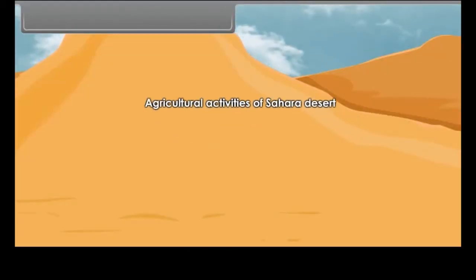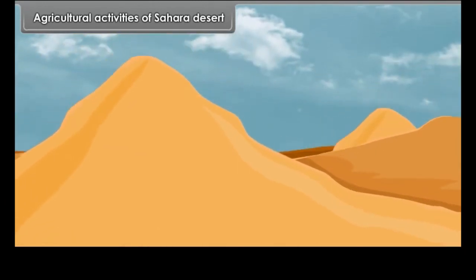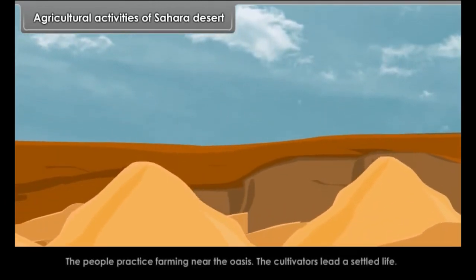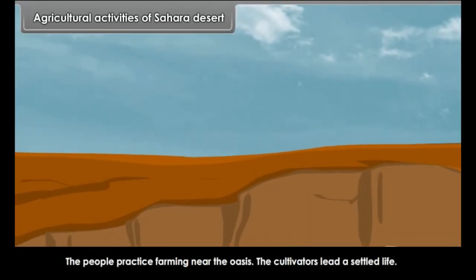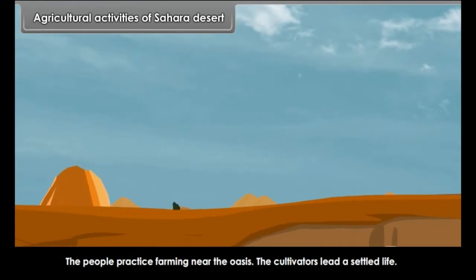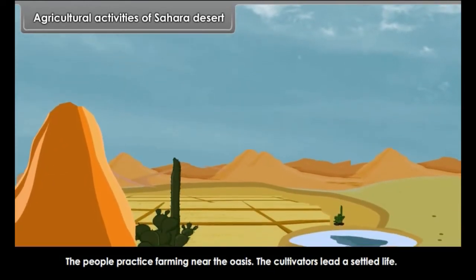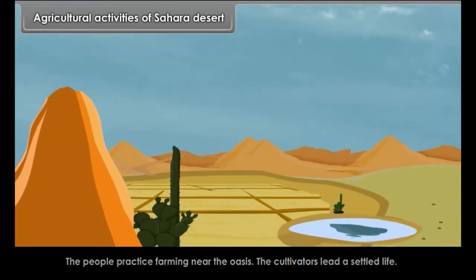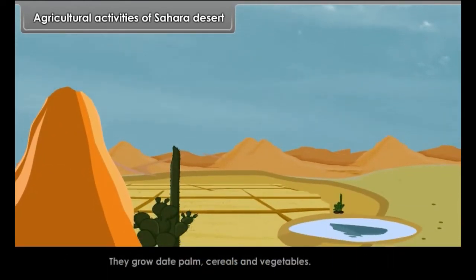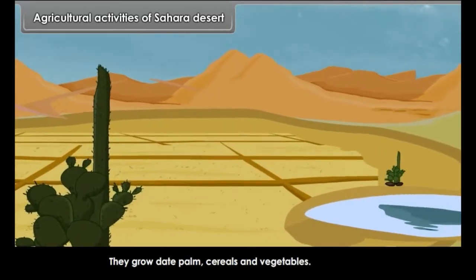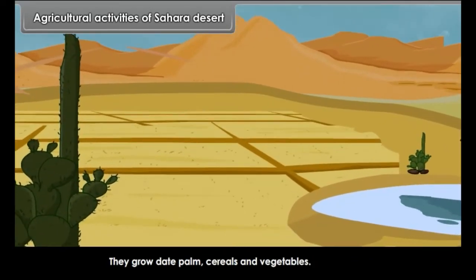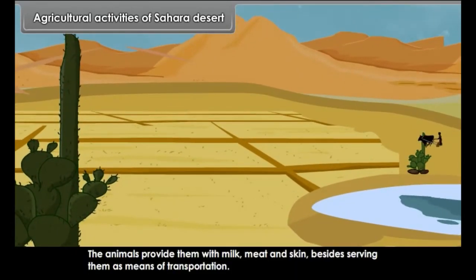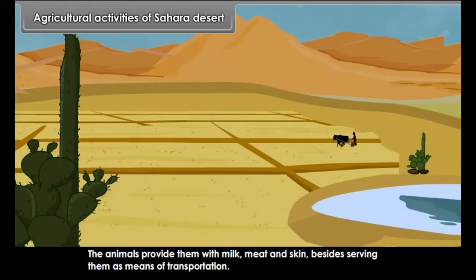Agricultural Activities of Sahara Desert. The people practice farming near the oasis. The cultivators lead a settled life and grow date palms, cereals, and vegetables. The animals provide them with milk, meat, and skin, besides serving as means of transportation.